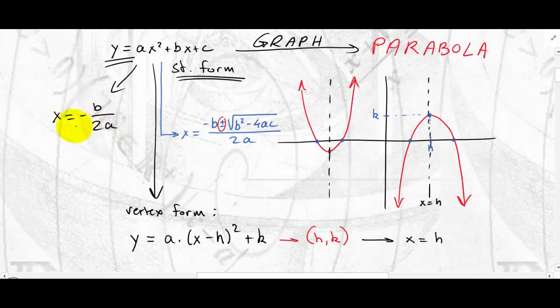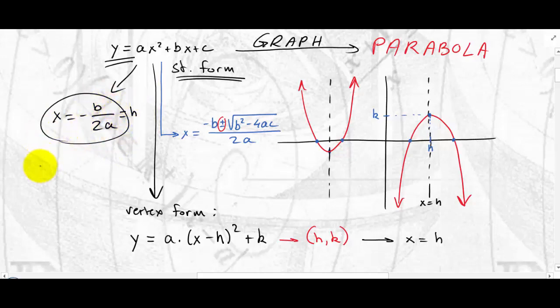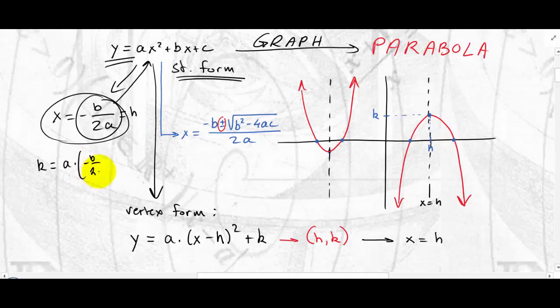From the standard form, h = −b / 2a. To find k, you plug −b / 2a into the equation: k = a(−b/2a)² + b(−b/2a) + c. This is a bit complicated, and you do not need to remember this formula in general.